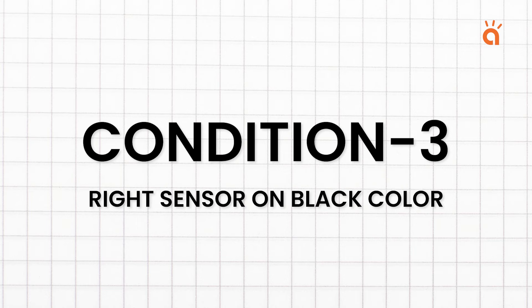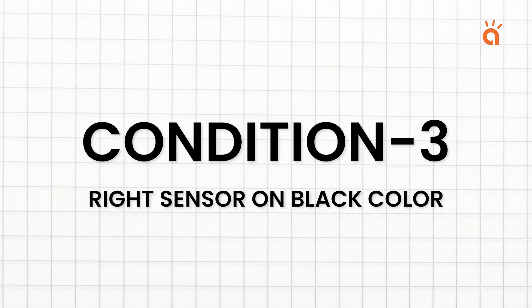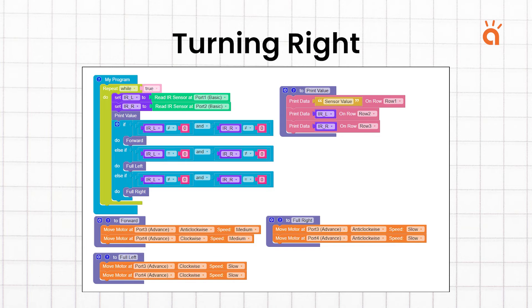Right sensor on black color. This condition is very similar to the last condition but just opposite to it. Here the right sensor is on black and the left sensor is on white. Hence the left sensor will return a value not equal to 0 and right sensor will return a value equal to 0. The robot will be programmed to turn right in this case until the condition is changed. Here is the code.